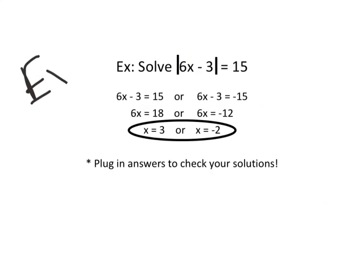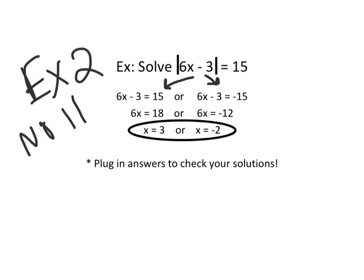Example 2 — put this in your notes. To solve this absolute value equation, set up two equations. The first is the same, just without the bars. The second changes the 15 to negative 15. Solving the first equation: add 3 to both sides, then divide by 6, and you get 3. On the right side: add 3, divide by 6, and you get negative 2. So the answers are 3 and negative 2.